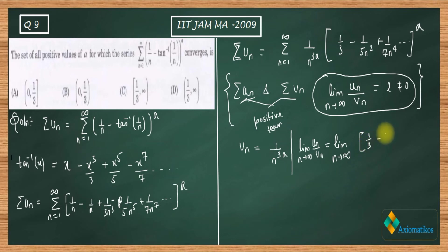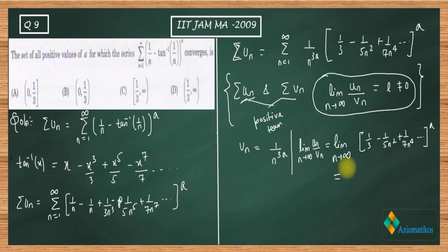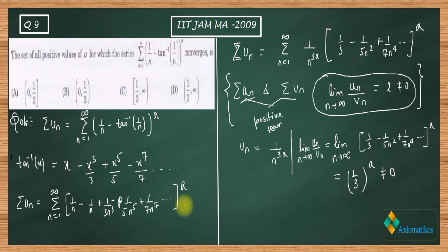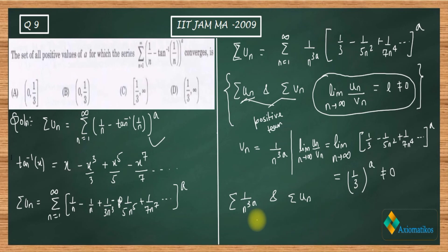With v_n = 1/n^(3a), the limit as n goes to infinity of u_n/v_n gives (1/3 minus 1/(5n²) plus 1/(7n⁴) ...) to the power a. As n goes to infinity, all terms with n vanish, so the limit equals (1/3)^a, which is a non-zero number. Therefore, summation 1/n^(3a) and the original series u_n converge together.